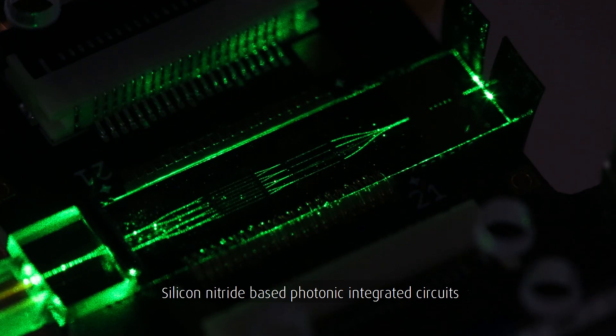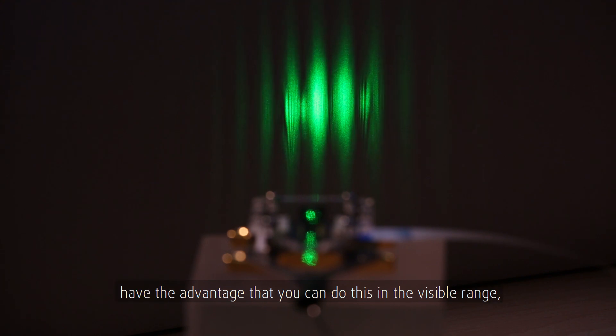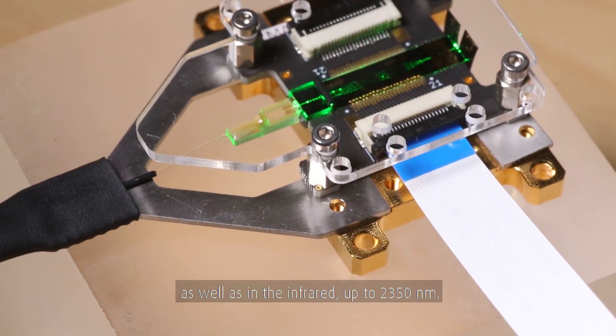Silicon nitride based photonic integrated circuits have the advantage that you can do this in the visible range, ranging from 400 to 800 nanometers, as well as in the infrared up to 2350 nanometers.